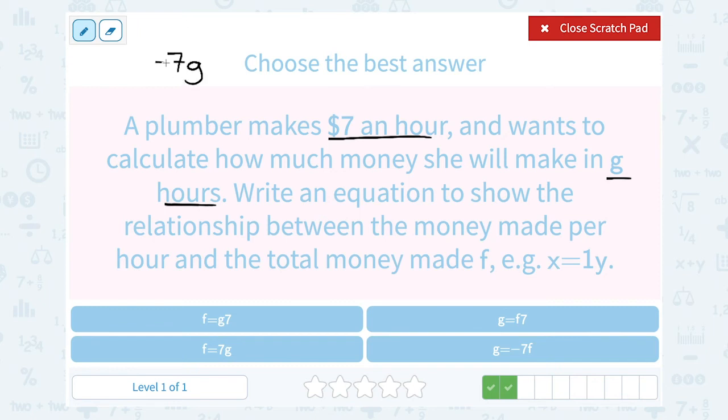And that should be equal to her total amount. The total amount of money is F. So we would say F is equal to 7 times G.